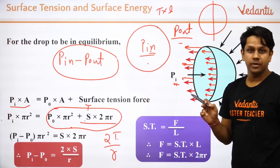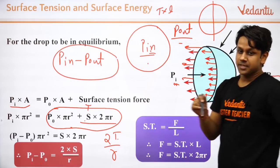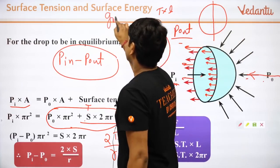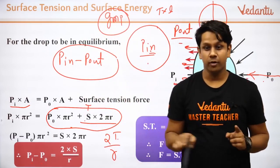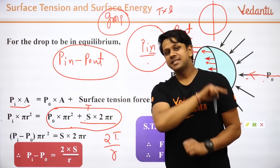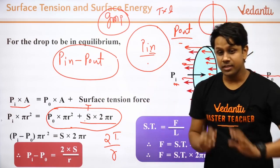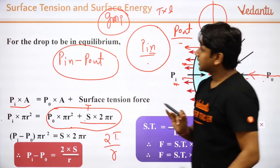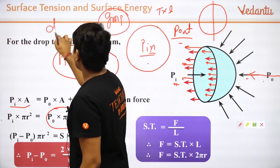So excess pressure for a droplet = 2T/r. This derivation is asked in school examinations, so it is important to know in detail.